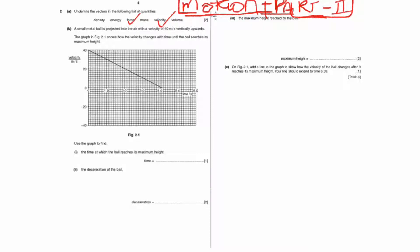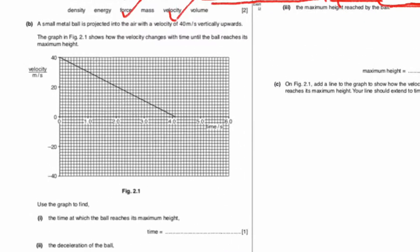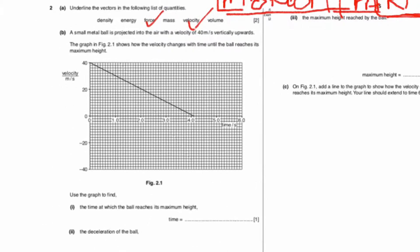Now we will solve part B of this question. A small metal ball is projected into the air with a velocity of 40 meters per second vertically upward. The graph in figure 2.1 shows how velocity changes with time until the ball reaches its maximum height.